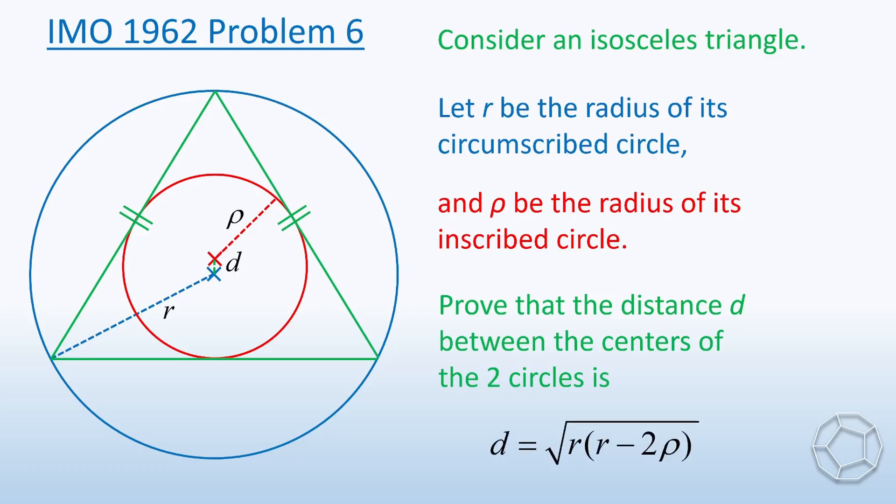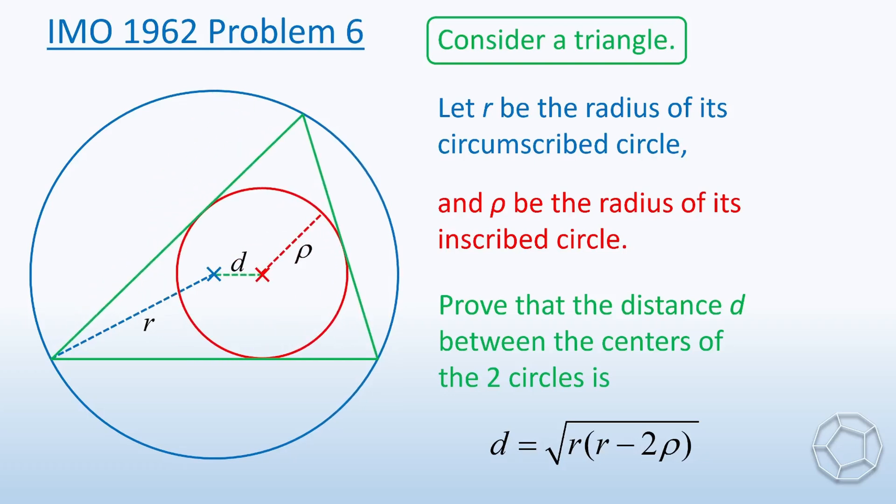Let's take away the condition of isosceles so that the triangle is a general one. Then the statement becomes Euler's Triangle Theorem. Here we use capital letter R and small letter r for the two radii. This notation is more convenient. So the theorem is written in this way.